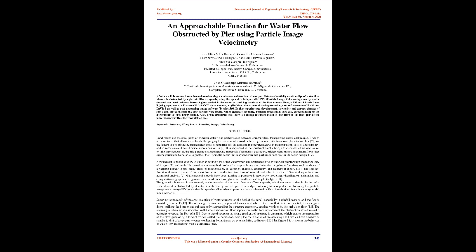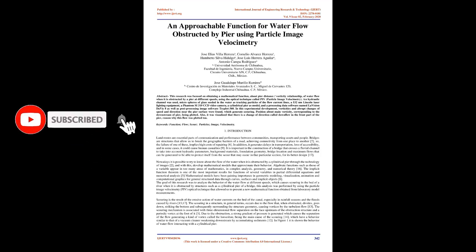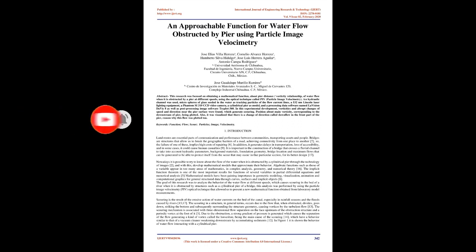In this experimental development, vorticities and abrupt changes of speed and direction near the pier surface were found, which generates scouring. The position of the main vorticity corresponding to the downstream of the pier was plotted. Also, it was visualized that there is a change of direction called downflow in the front part of the pier, which was also plotted.